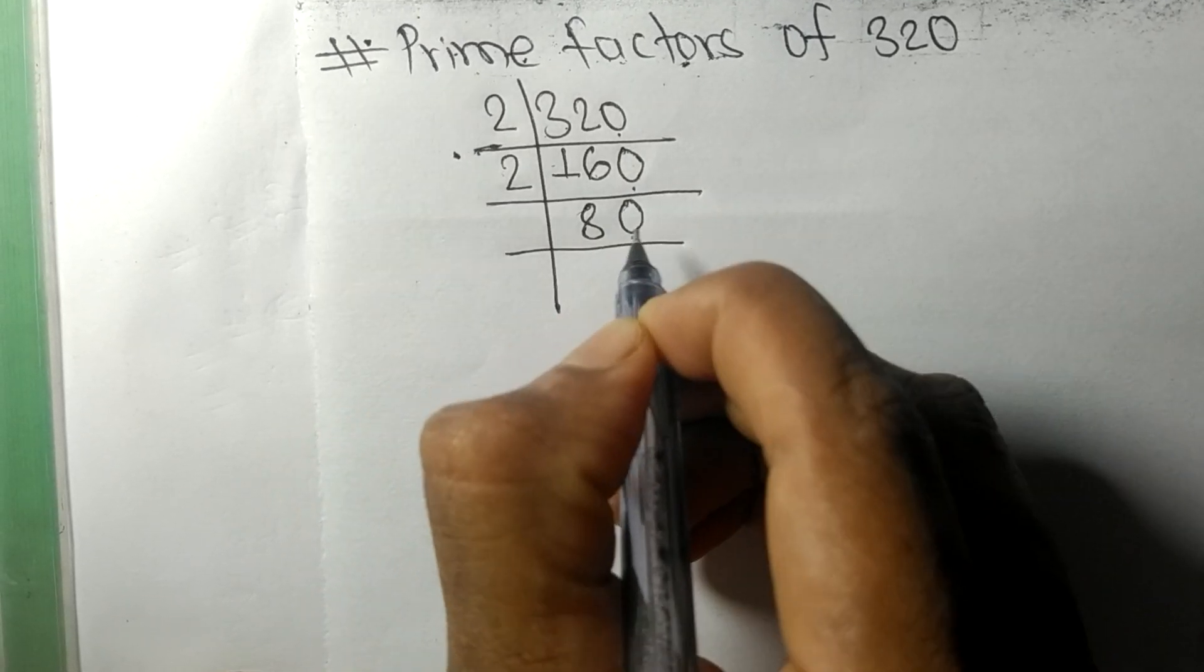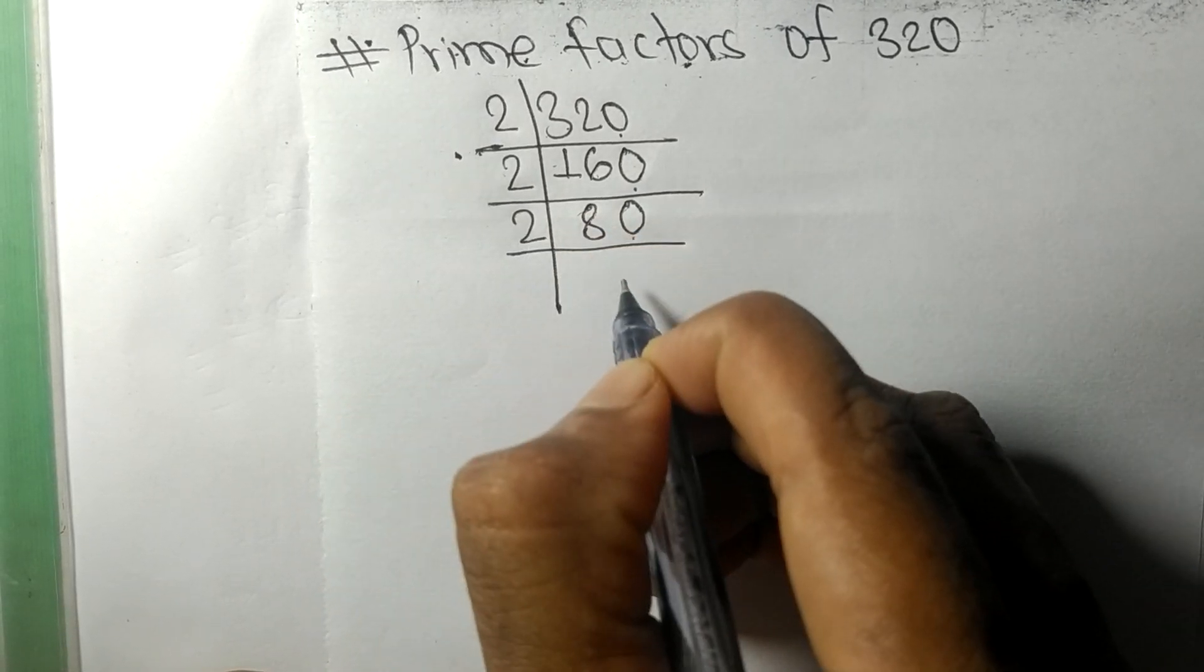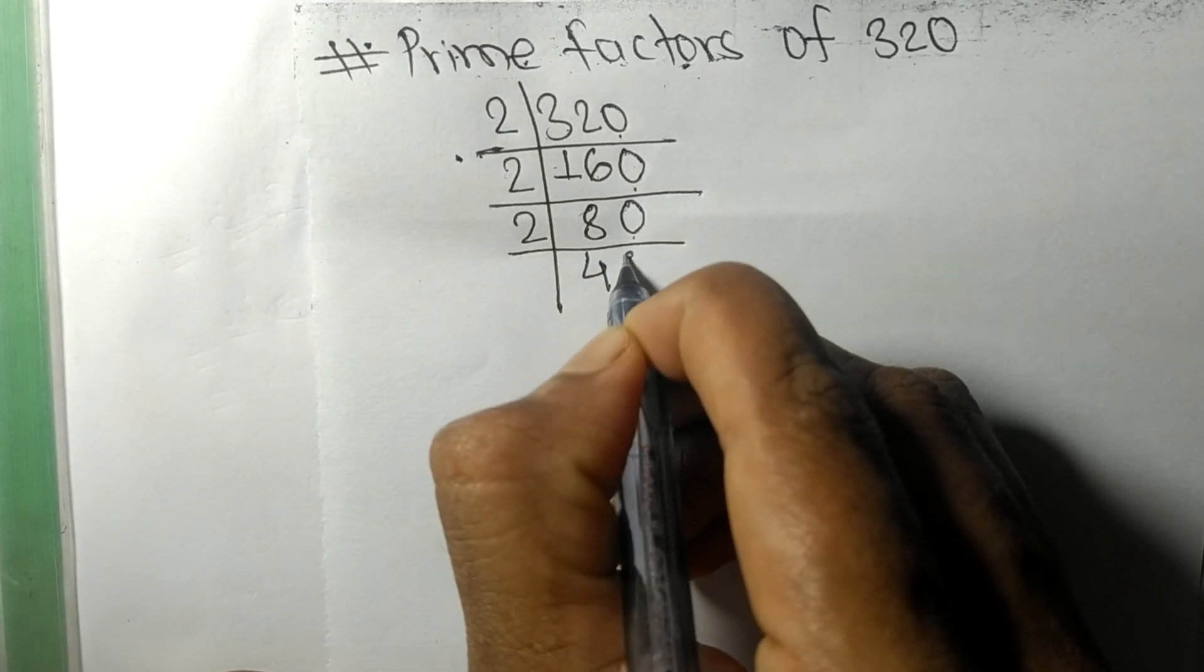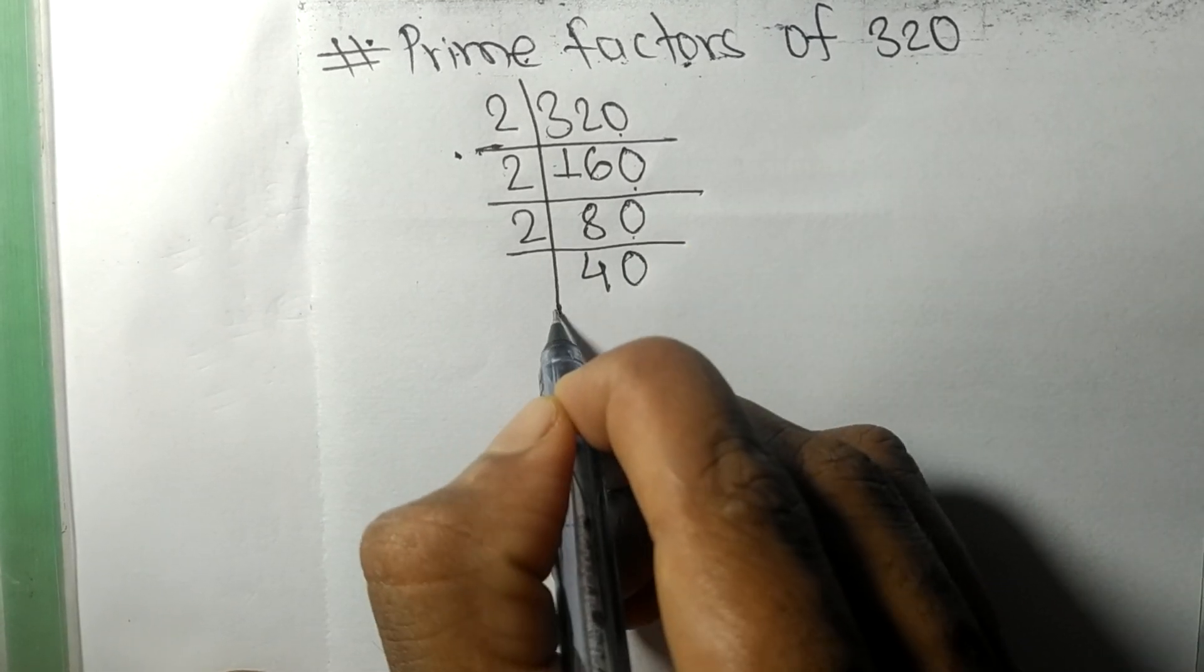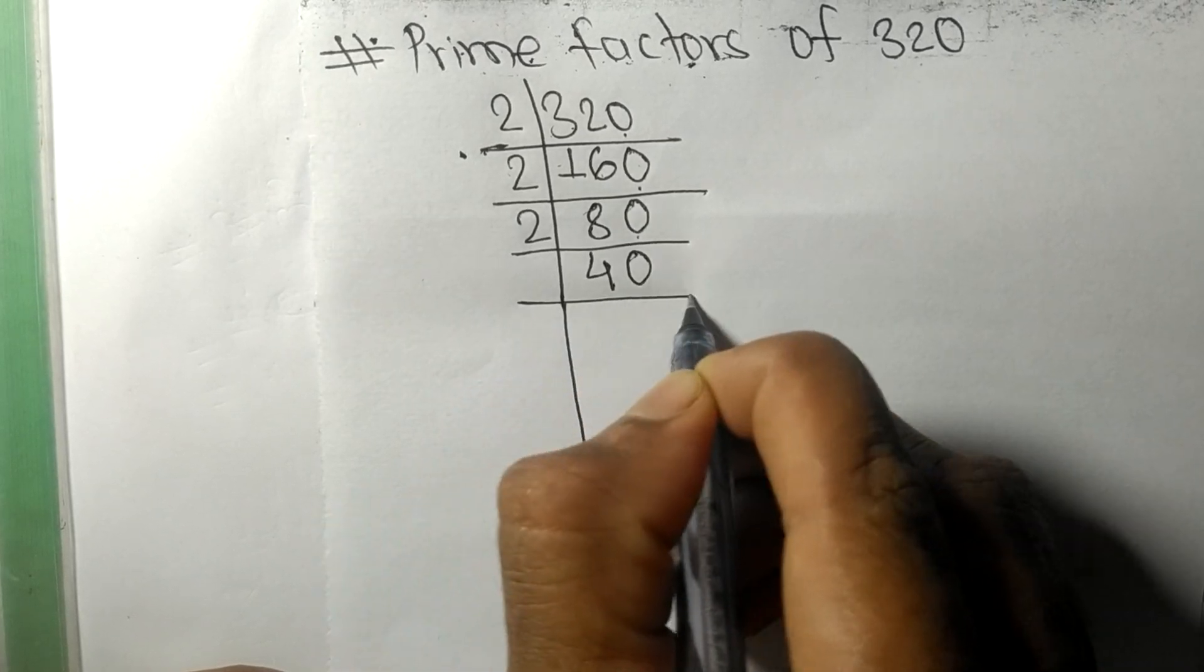2 times 4 is 8, 2 times 0 is 0. So again 0 at the last, so divisible by 2.